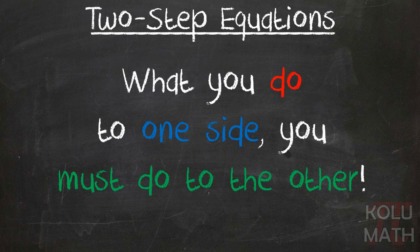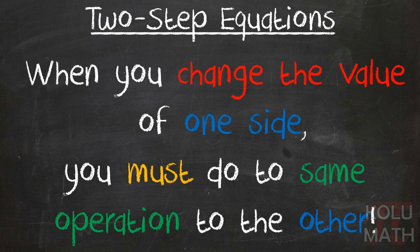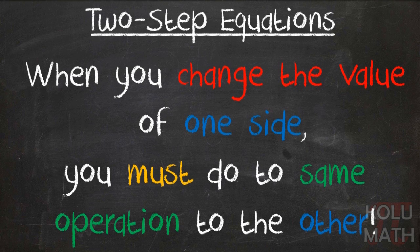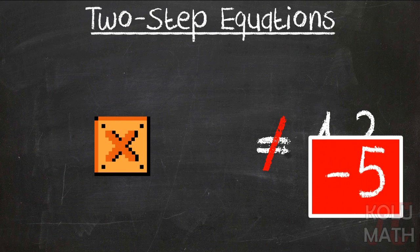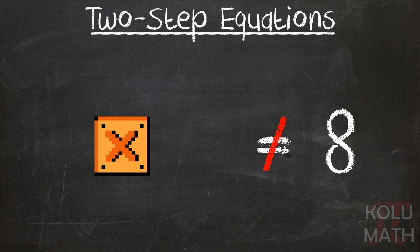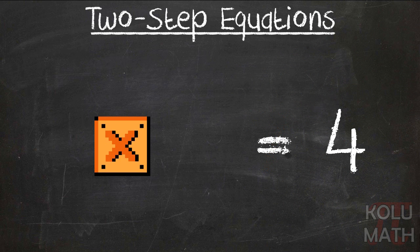Actually, let me update that definition to be a bit more precise. Instead of 'what you do to one side, you must do to the other,' let's think of it as: when you change the value of one side, you must do the same operation to the other. For example, you might simplify one side when you can't simplify the other — that's fine. But when you're changing the value, when you're upsetting what's on those balances, that's when you have to apply the operation to the other side. So what we forgot was to subtract 5 and then divide by 2 on the right side as well, giving us x equals 4.